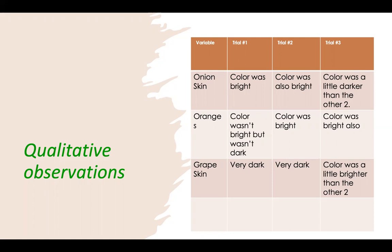For oranges, the first trial the color wasn't bright, but it also wasn't dark. For the second trial, the color was bright. And for the third trial, the color was also bright. And then for the grape skin: trial one and trial two, both of them were very dark. But then trial three was a little brighter than the other two trials.